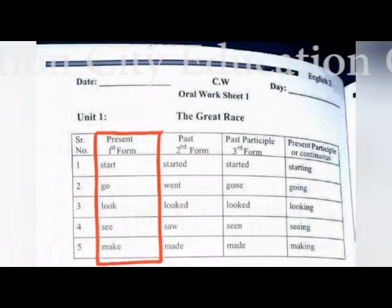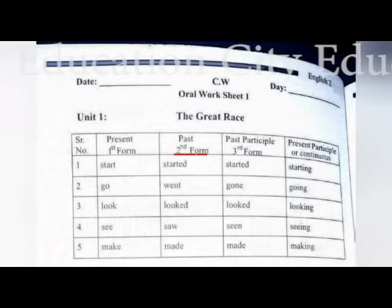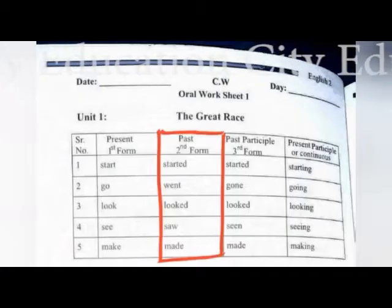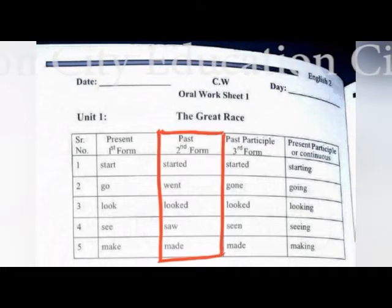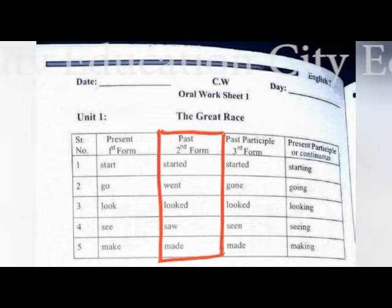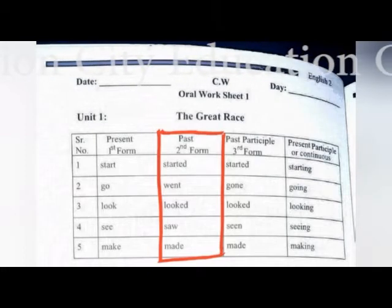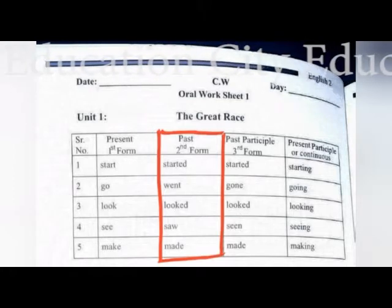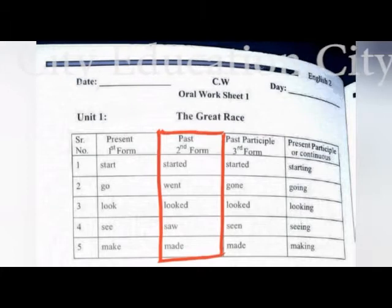Now comes the second block — past, second form. Past second form is an action that has already been done. Look at the second form: the five verbs are started, went, looked, saw, made. So the present first form is converted into past second form: start becomes started, go becomes went, look becomes looked, see becomes saw, make becomes made.